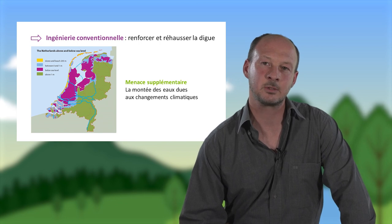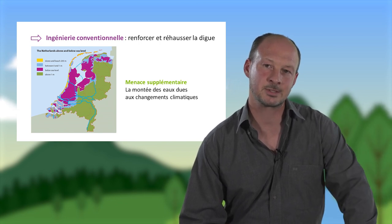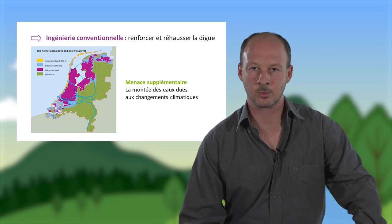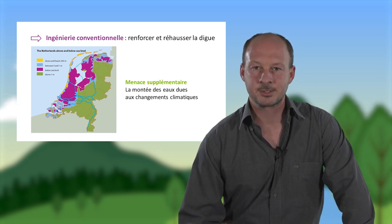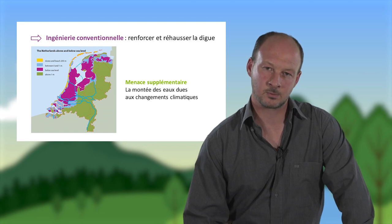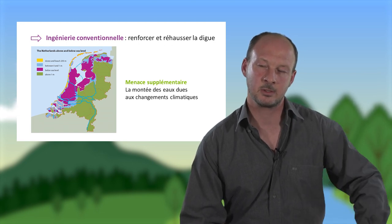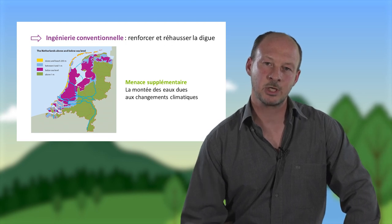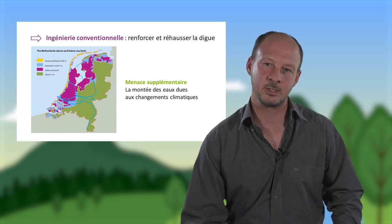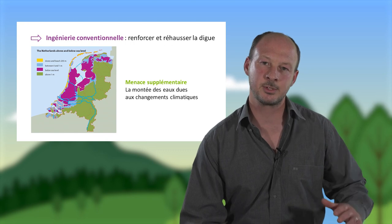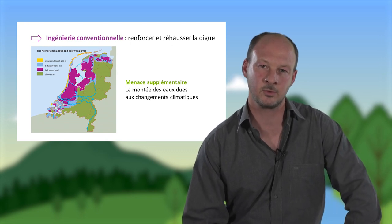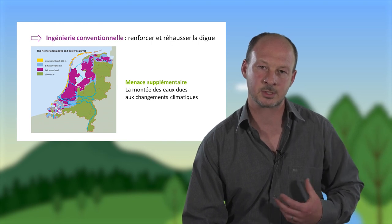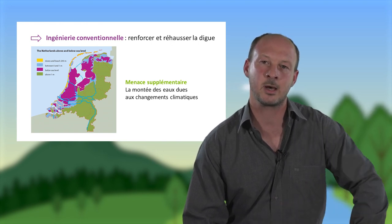Mais dans un contexte de changement climatique, avec une fonte des glaces et une montée du niveau de la mer, la menace devient de plus en plus importante. Des ingénieurs habitués à l'ingénierie conventionnelle proposent d'arracher les arbres qui se développent sur les digues et les dégradent, et de rehausser de quelques mètres le niveau de la digue, ce qui a des conséquences financières extrêmement importantes, plusieurs dizaines de milliards d'euros.